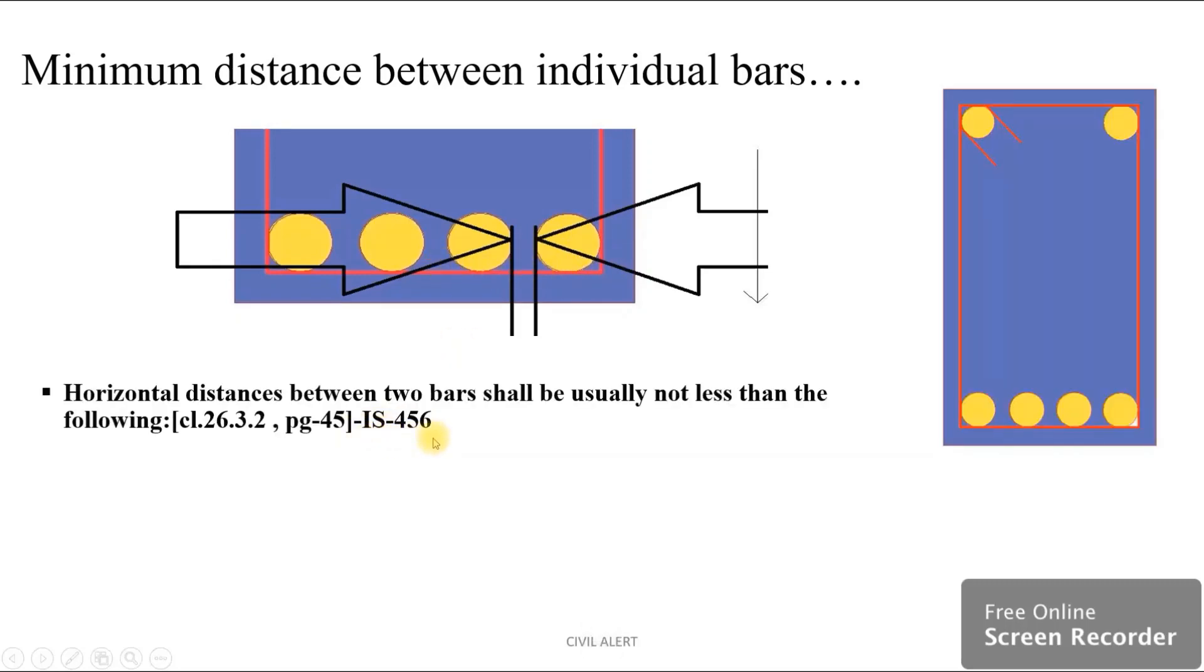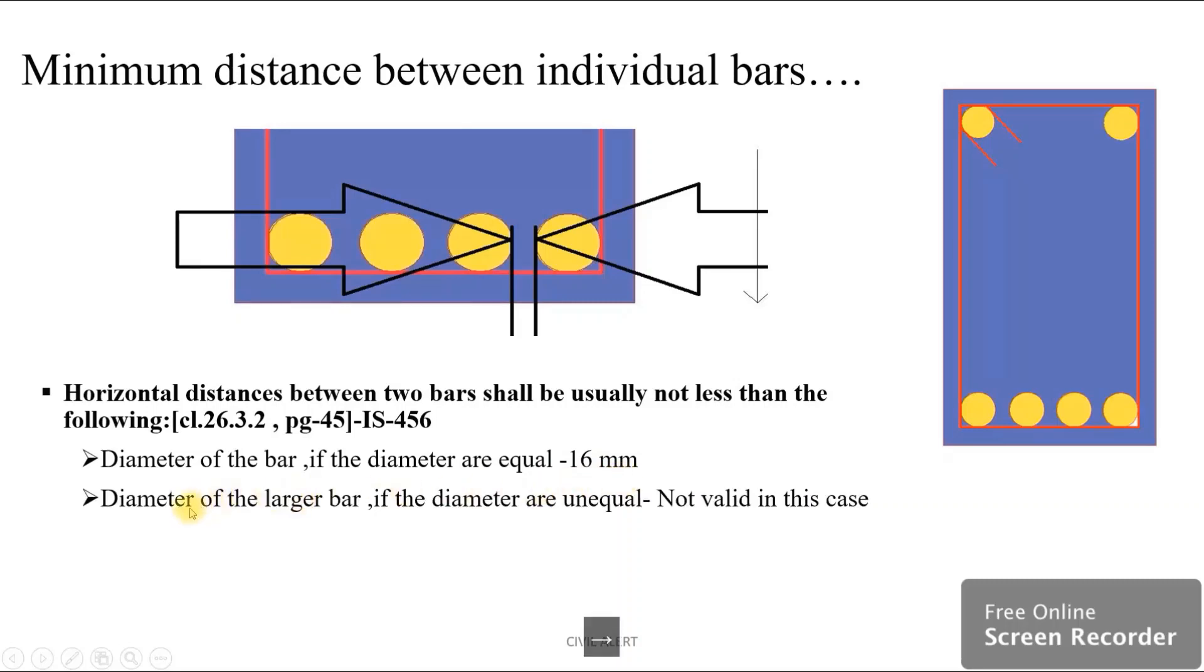As per IS 456, clause 26.3.2, page 45, horizontal distance between two bars shall usually not be less than the following: first case - diameter of the bar if diameters are equal. In this case, we have 60 mm diameter bars, so the diameter equals 60 mm. Second case - diameter of the larger bar if diameters are unequal. In this case, diameters are equal, so this case is valid.